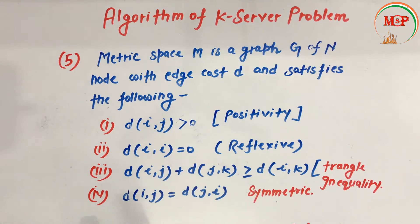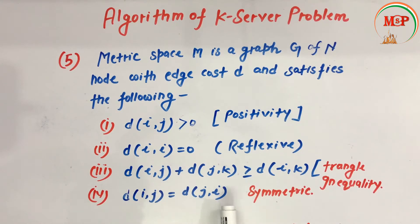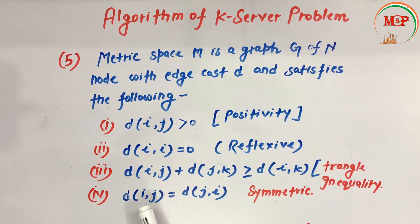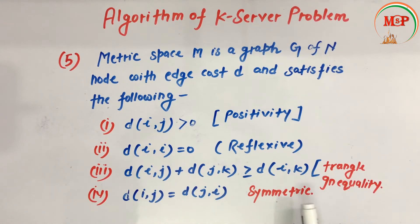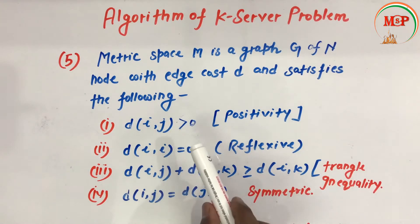The next condition is: distance of (i, j) equals distance of (j, i). That is, the distance between one node and another node remains the same whether we travel in the forward direction or the backward direction. This is called the symmetric relation.